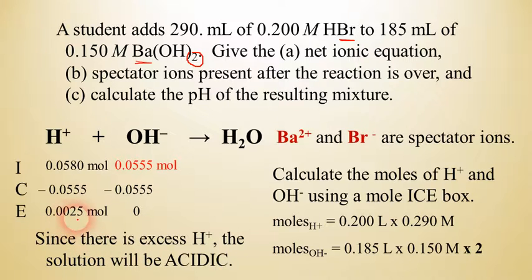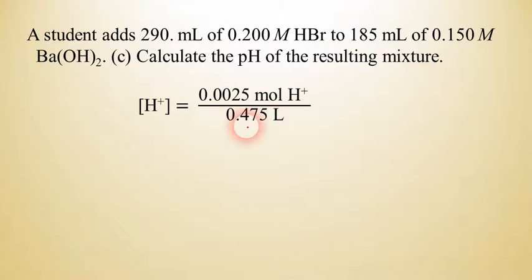So from this point, we can solve the problem as an acid. So if we have 0.00250 moles of hydrogen ion, we need to find the molarity of that. So we divide that by the volume. So the total volume is whatever 290 mils plus 185 mils would be. So when you compute that, you find that it's about 475 milliliters. So we divide the moles of hydrogen ion we got by that total volume. And when you do that, you get an answer of about 0.0053 molar.